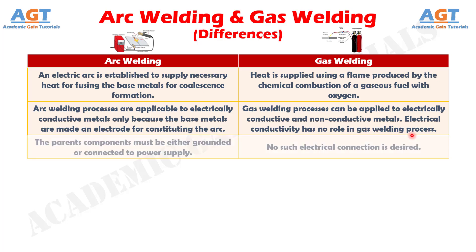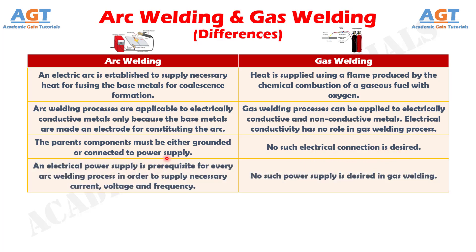Difference number 3. In arc welding, the parent components must be either grounded or connected to the power supply, whereas in gas welding, no such electrical connection is required. Difference number 4. An electrical power supply is prerequisite for every arc welding process in order to supply the necessary current, voltage, and frequency, but no such power supply is needed in gas welding.